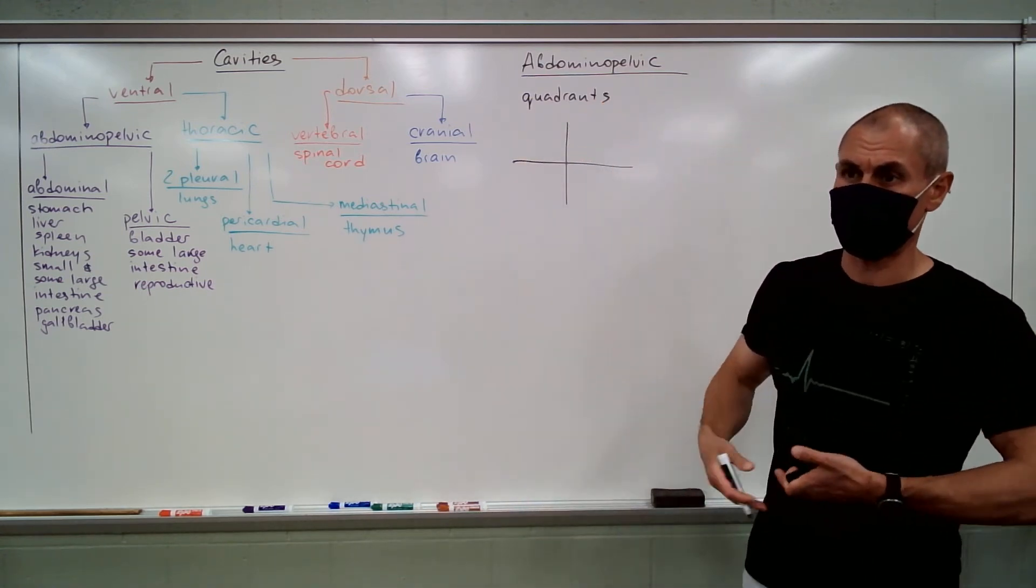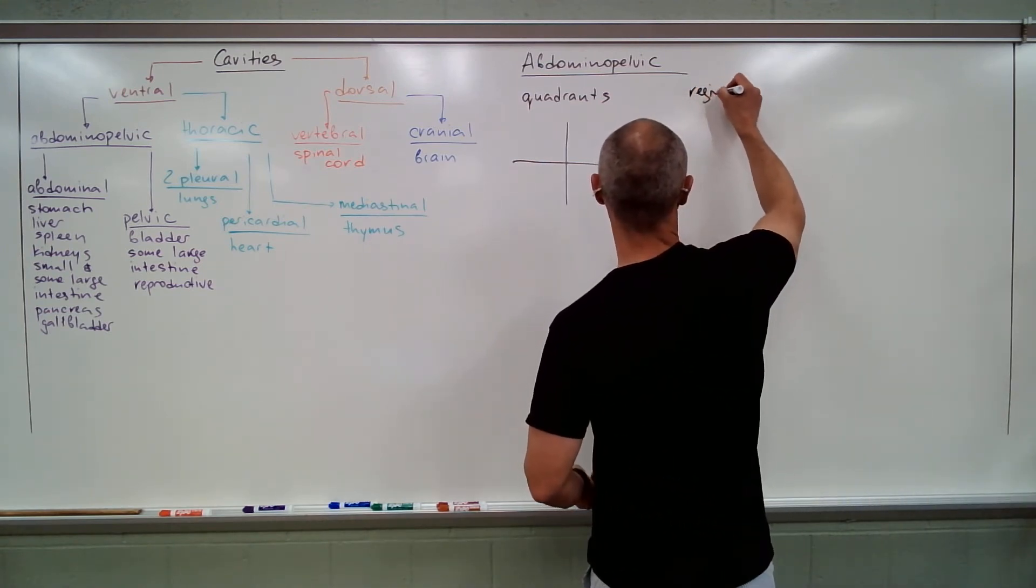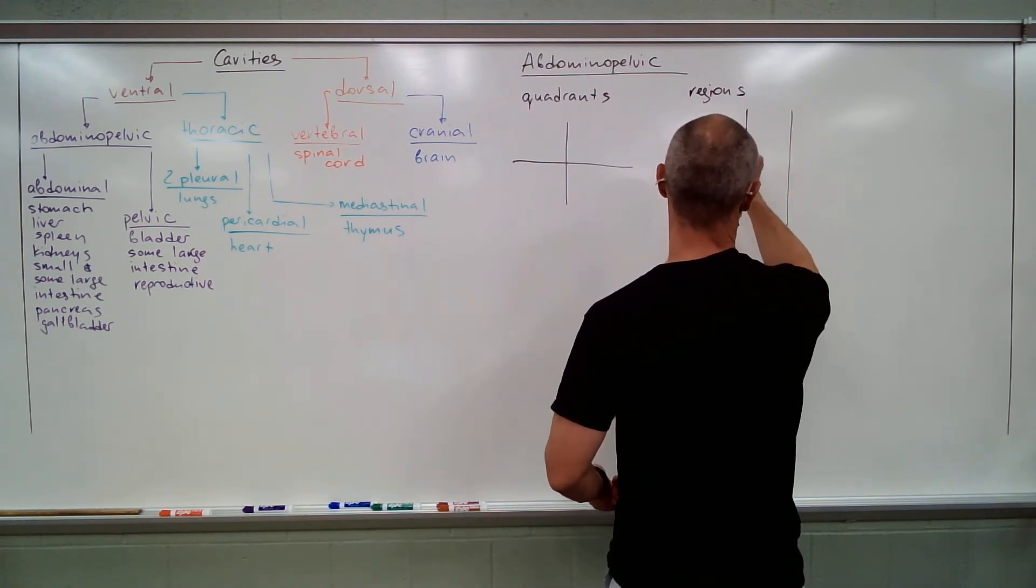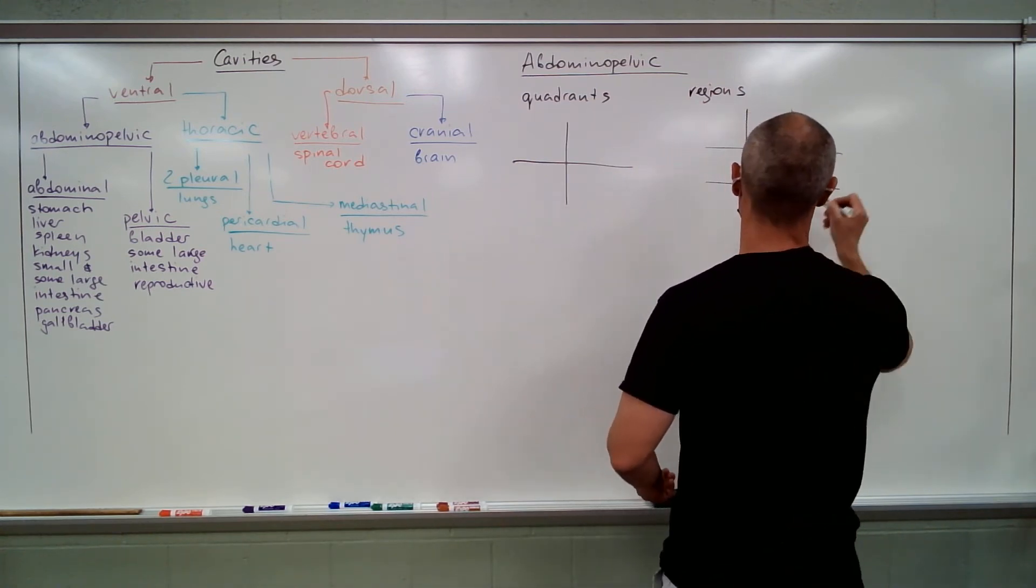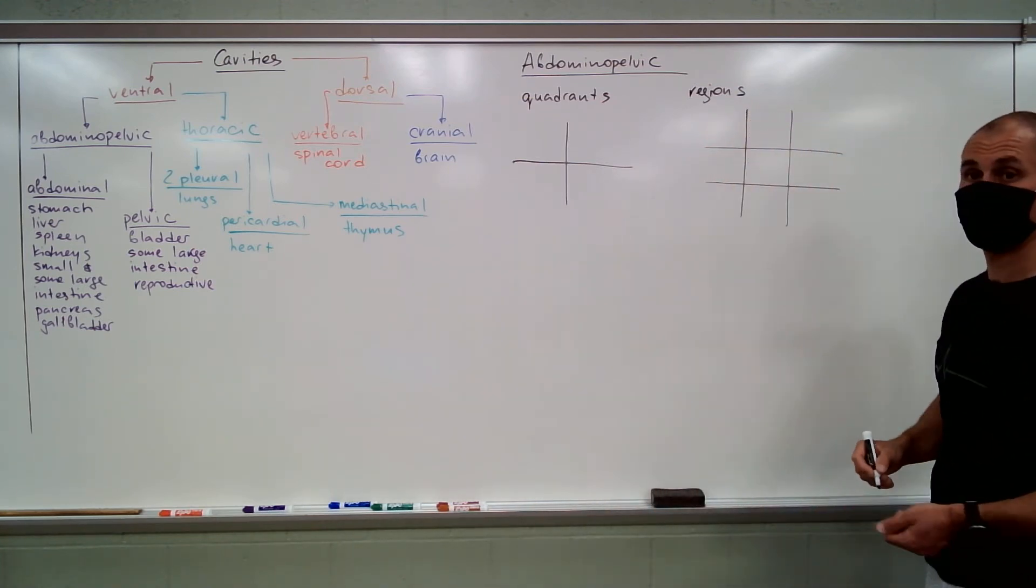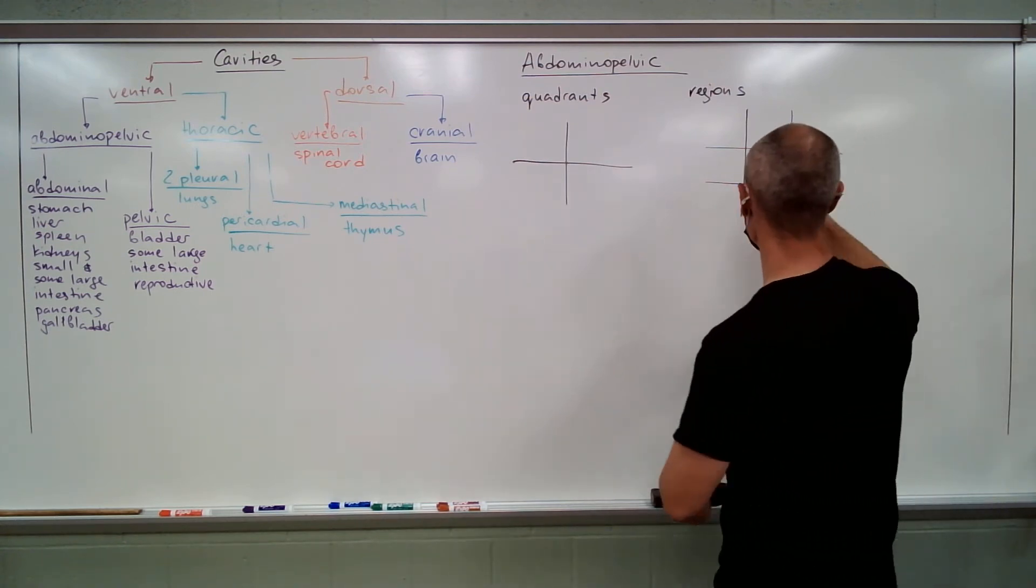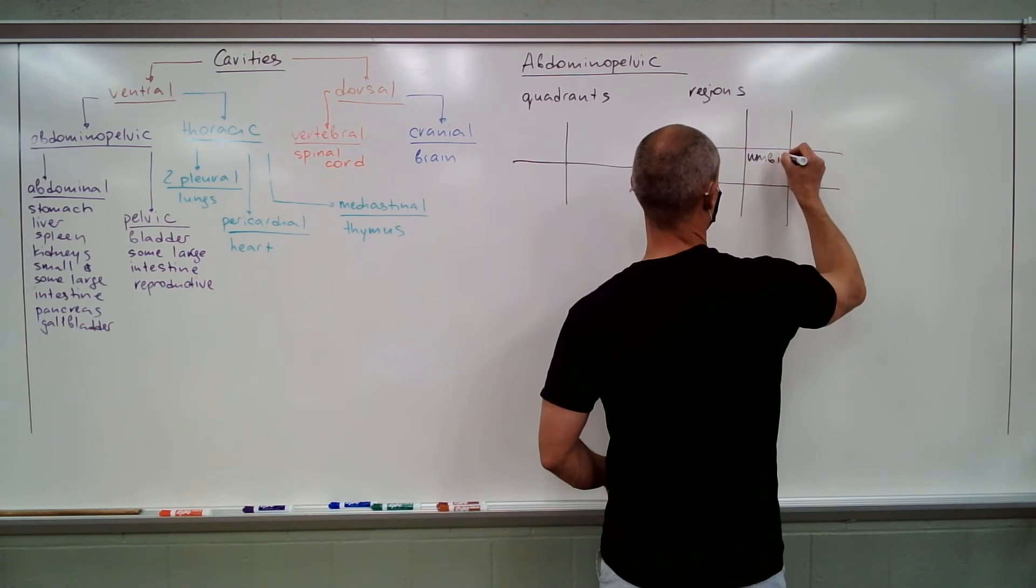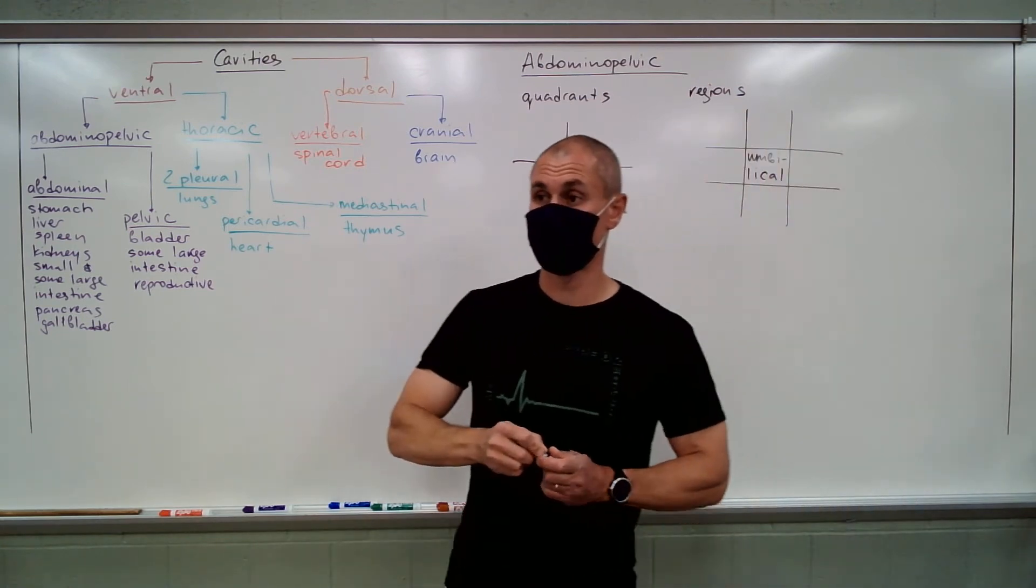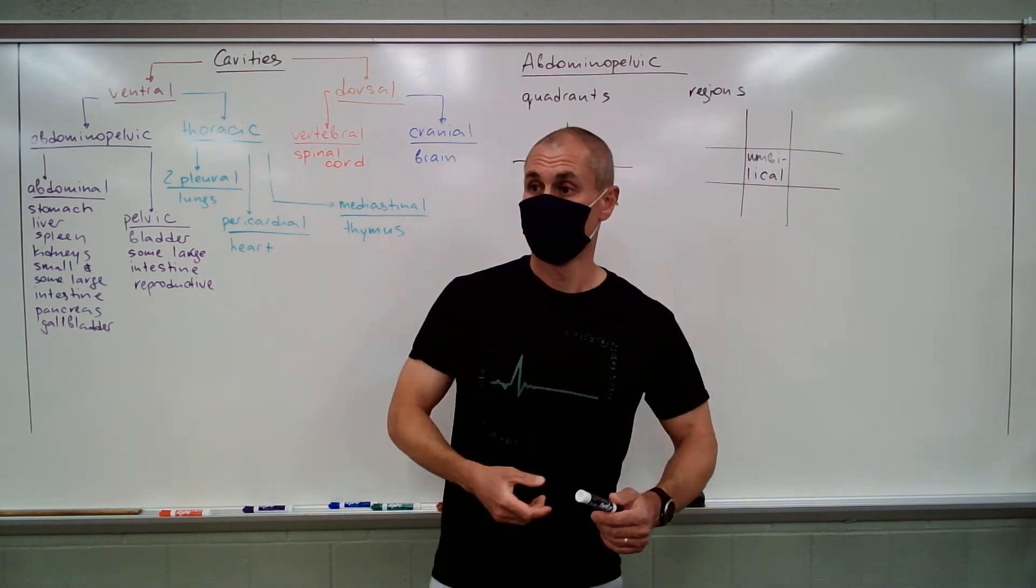So, how do you do it? Quadrants, good, but they, again, pretty large. So, regions may be a little better. So, in the center, the names, as many things in anatomy, make not a lot of sense. So, in the center, kind of makes sense, you have umbilical. So, umbilicus is your belly button, it is around your belly button.